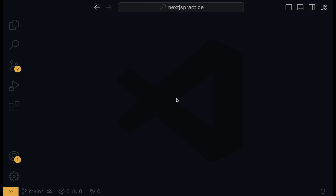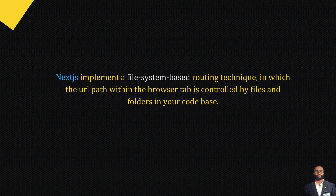In this lecture, we will go ahead to discuss the routing system in Next.js 14. Let's talk about the app router. Next.js implements a file system-based routing technique in which the URL part within the browser tab is controlled by the files and folders within your code base.